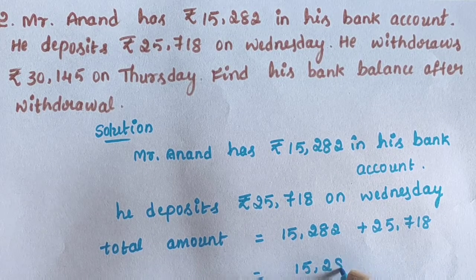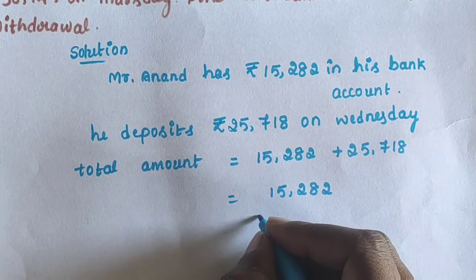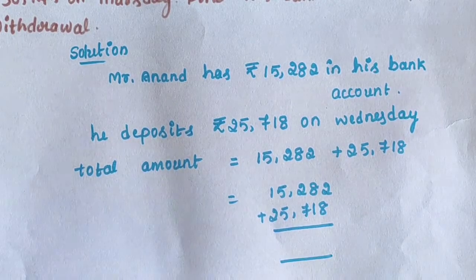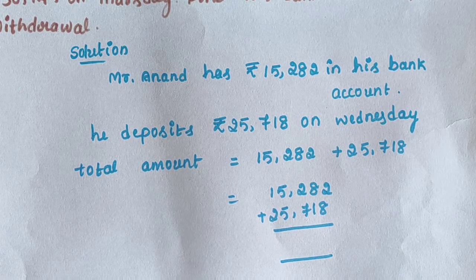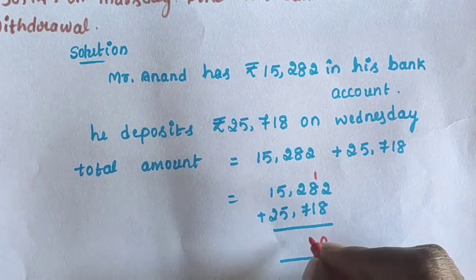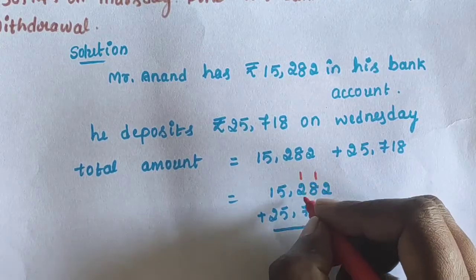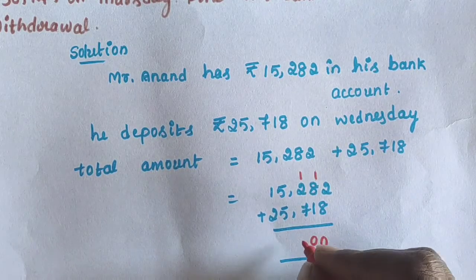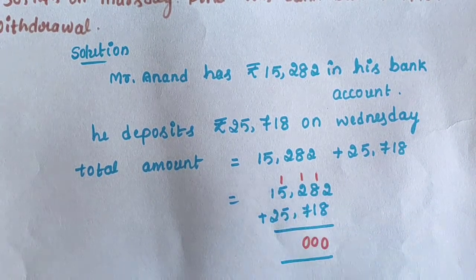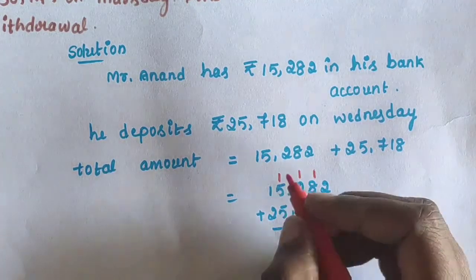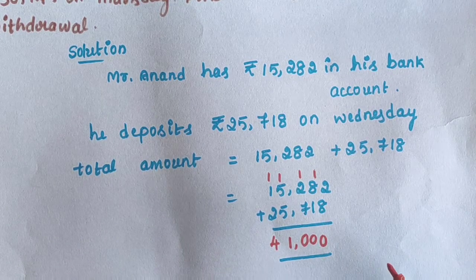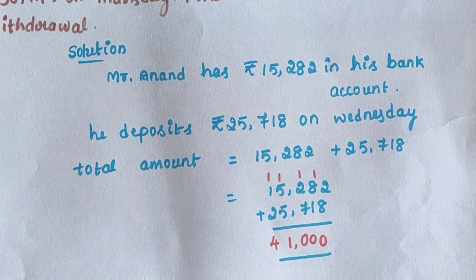15,282 is added by 25,718. In the units place: 2 plus 8 is 10, write 0 carry 1. 1 plus 8 is 9, 9 plus 1 is 10, write 0 carry 1. 1 plus 2 is 3, 3 plus 7 is 10, write 0 carry 1. 1 plus 5 is 6, 6 plus 5 is 11, write 1 carry 1. 1 plus 1 is 2, plus 2 is 4. Total amount in bank account is equal to 41,000.